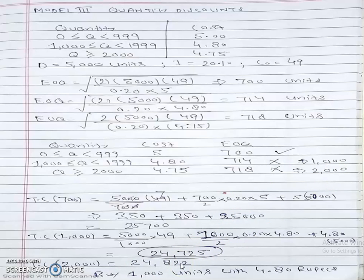We pick the value with minimal total annual inventory cost. Among the three, the minimum is 24,725, corresponding to 1,000 units. So the answer is that the manufacturing company should buy 1,000 units at a cost of 4.80, thereby availing a discount of 0.20 rupees from the original price. Thank you.